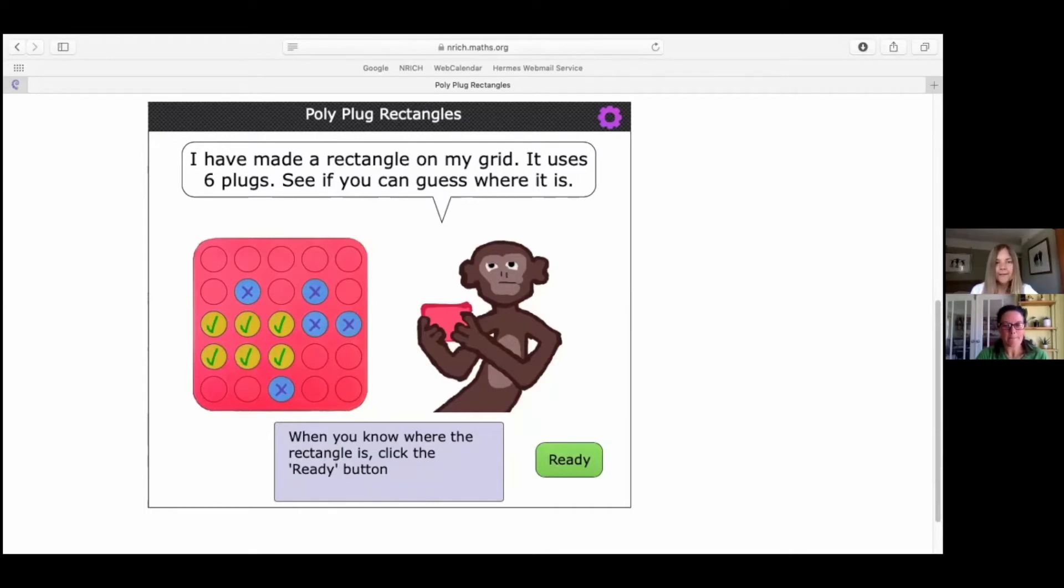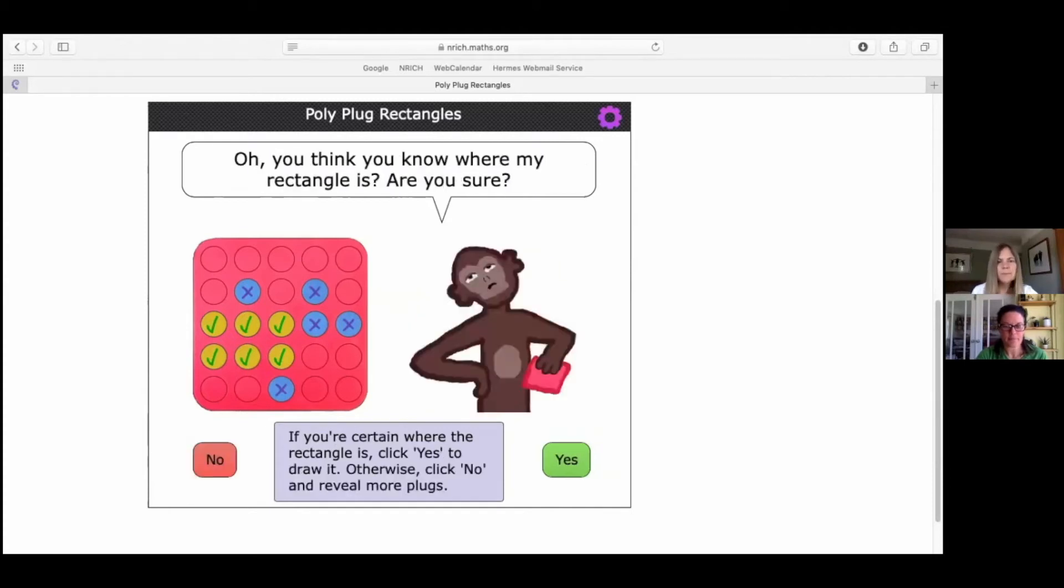Now, I can see down here, it says when you know where the rectangle is, click the ready button. Okay? Are we ready, Fran? Yes. Oh, what does monkey say now? Oh, you think you know where my rectangle is? Are you sure? Oh, that's interesting. I'm sure. You're sure? I'm sure as well.